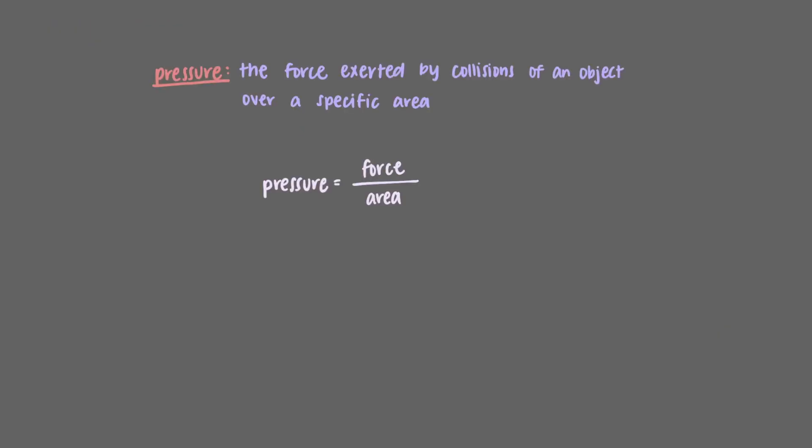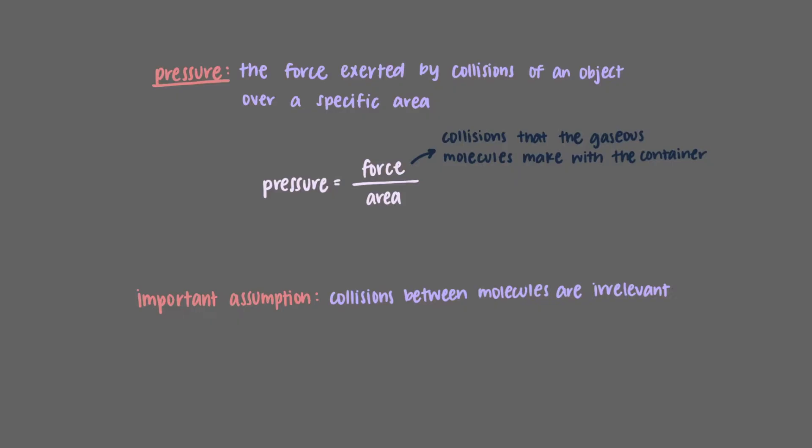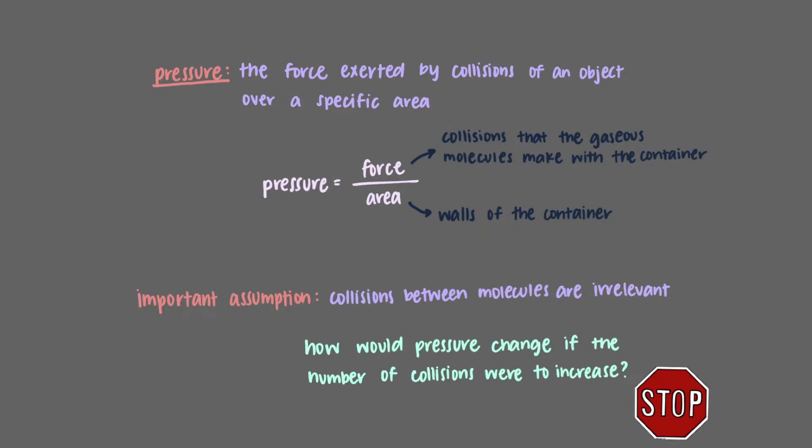Pressure is defined as the force exerted by collisions of an object over a specific surface area. Gaseous molecules are always moving and colliding with the container. We'll make the assumption, and it's a good one, that collisions between molecules are irrelevant. So the collisions that the gaseous molecules make with the container account for the force they exert on the container. The walls of the container account for the surface area that the molecules exert force on. How would pressure change if the number of collisions were to increase?